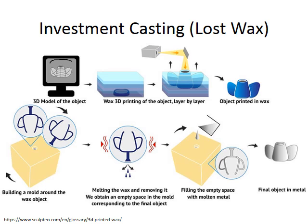The part to be created is drawn in a CAD package, and then a 3D model of that is printed using a 3D printing technique — the object printed in wax. The next thing that happens is a mold is made around the wax object. Usually, the wax object is dipped into a ceramic slurry numerous times, and the ceramic slurry hardens. Now you have a ceramic mold of the part to be manufactured.